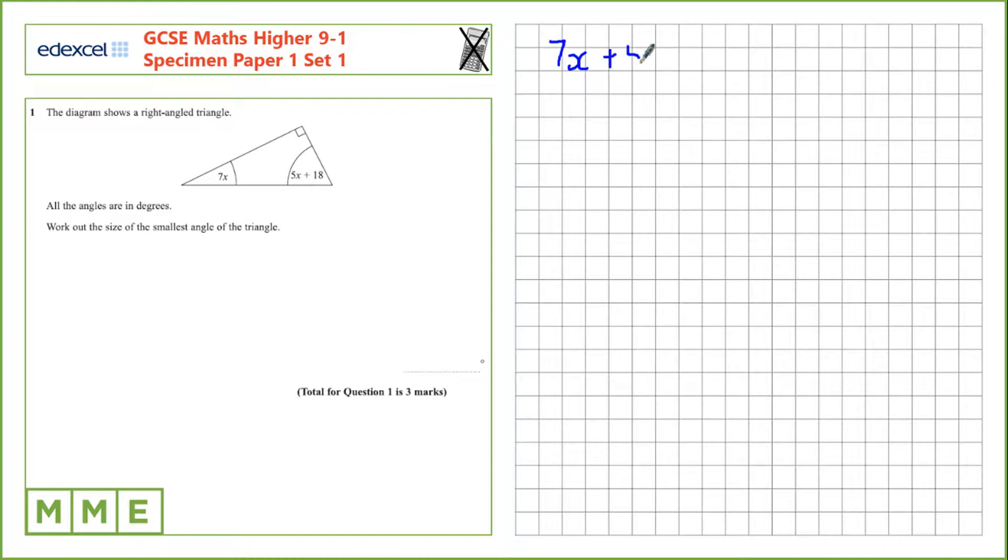We have 7x plus 5x plus 18 plus the 90 degree angle is 180. So on this side let's collect up terms. We have 7x plus 5x which is 12x. I'm going to leave these separate for now.